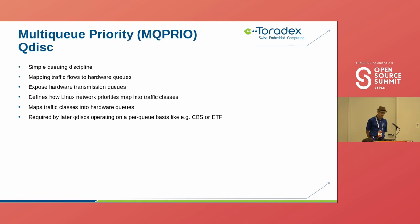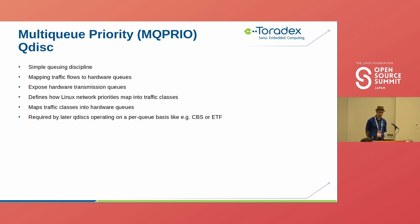Let's look at one of the qdiscs — for example, the multi-queue priority MQPRIO qdisc. This is a very simple queuing discipline that maps traffic flows to hardware queues. If you have hardware with multiple queues, it makes sense to map them one-to-one to such flows. It exposes hardware transmission queues and defines how Linux network priorities map to those hardware traffic classes. This can then be used by later qdiscs operating on a per-queue basis, like CBS or ETF.